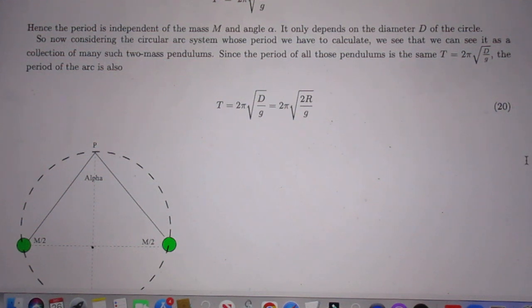And I find that the period is 2 pi times the square root of capital D divided by G. Hence, the period is independent of the mass M and independent of the angle alpha. It only depends on the diameter D of the circle.